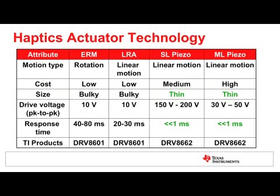Piezo actuators are either single or multi-layer. Single layer haptic actuators need up to 100 volts peak-to-peak to 200 volts peak-to-peak to drive. Multi-layer haptic actuators need up to 30 volts peak-to-peak to 50 volts peak-to-peak to drive.